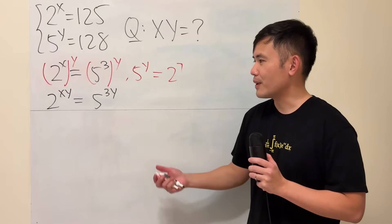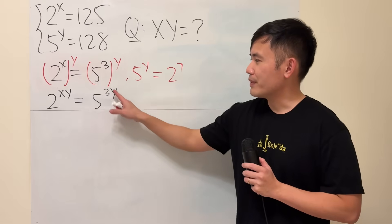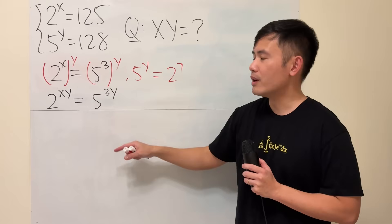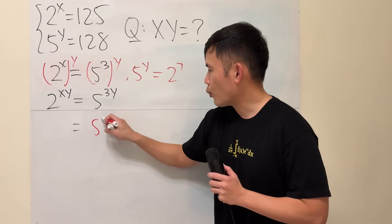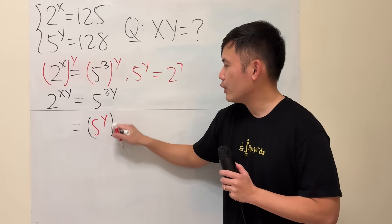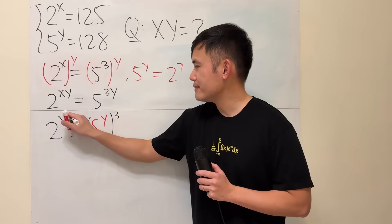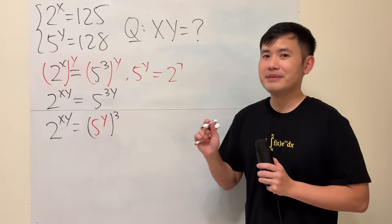But what's the value though? Hmm, let's look at this. We have 5 to the 3y power. I'm actually going to rewrite this as 5 to the y first, and then raised to the 3rd power. Can we do that? Yes.